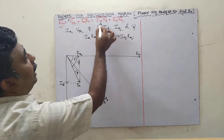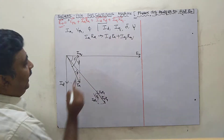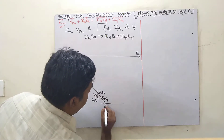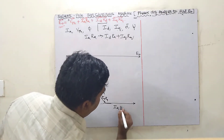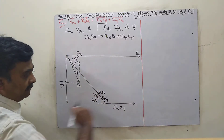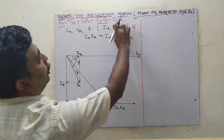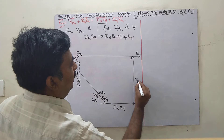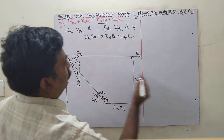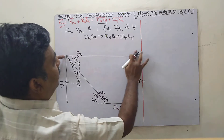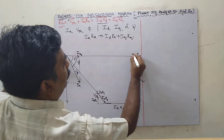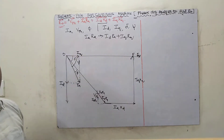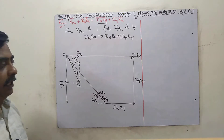Next, I add ID·Xd, which will be 90 degrees leading ID. Similarly, IQ·Xq will be leading IQ by 90 degrees. Adding all these components — V phase, IA·RA, ID·Xd, and IQ·Xq — the full resultant value is called E naught. The origin is O and F is the required E naught value.